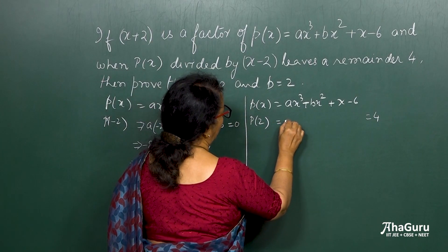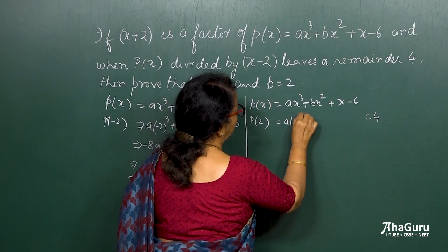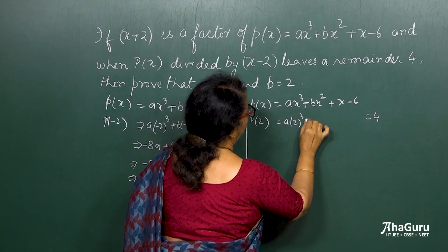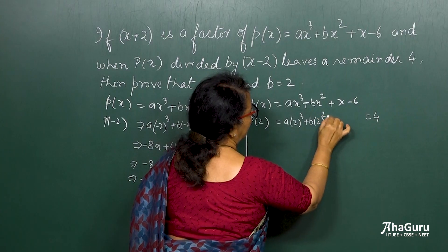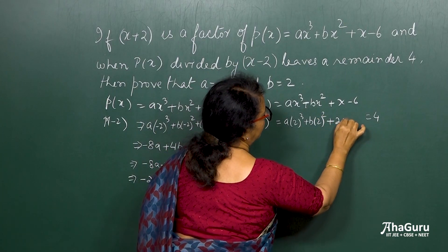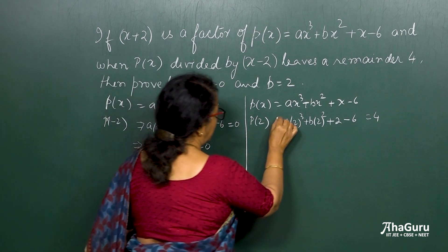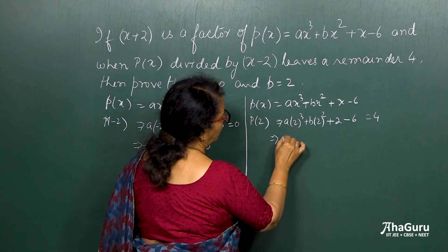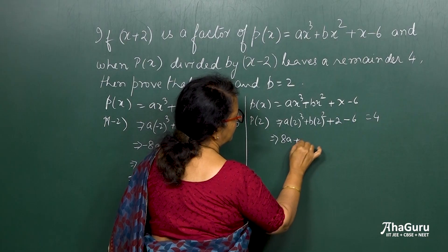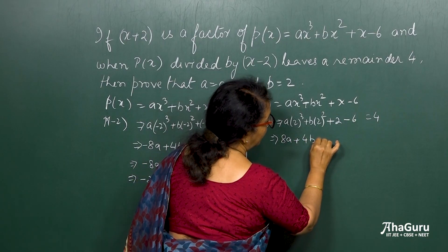So when you do this, you have a into 2 cube, and then you have b into 2 square, then you have plus 2, and then minus 6 is equal to 4.